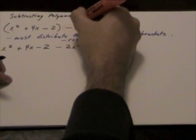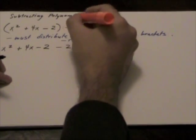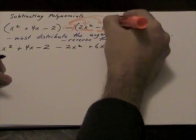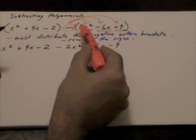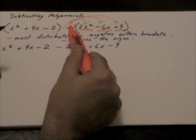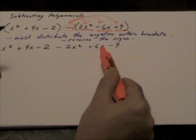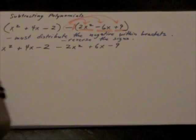Now really what we did was we treated this negative as if it was really a negative 1. So this negative 1 we distributed just like we would using the distributive law. Negative times 2x squared becomes negative 2x squared. Negative times negative 6x will give me positive 6x. Negative times positive 9 will give me negative 9.